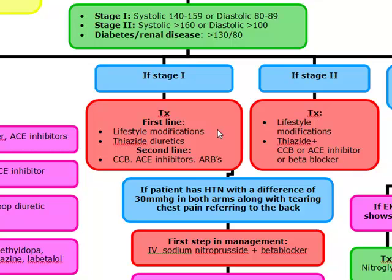If the first-line therapy of therapeutic lifestyle changes is ineffective, then we're going to go to pharmacologic therapy. We want to look at the patient's history first and choose the drug based on that. But for the most part, we're going to use either a calcium channel blocker, an ACE inhibitor, or an ARB as our second line after lifestyle modifications.